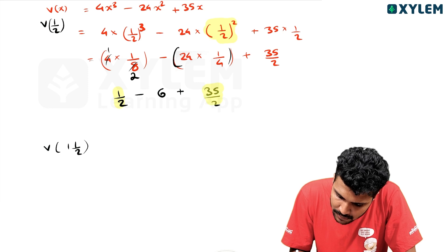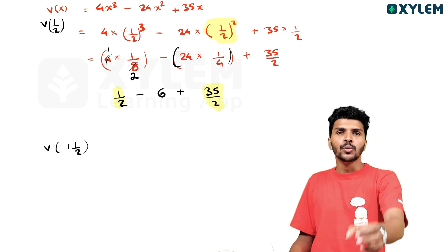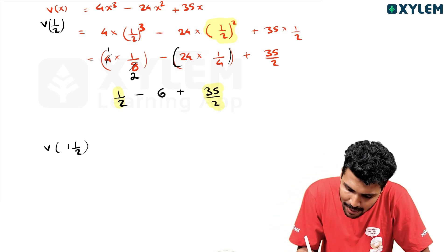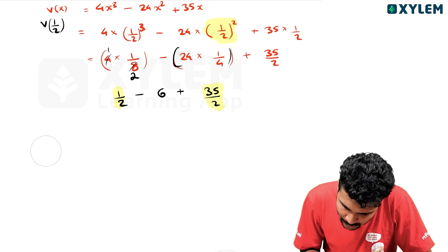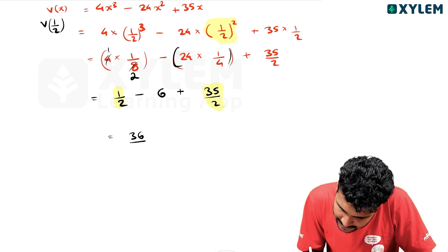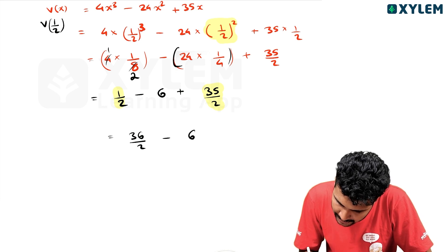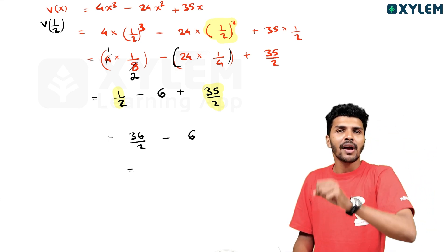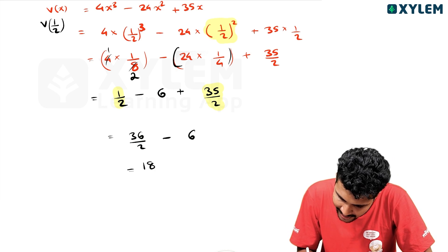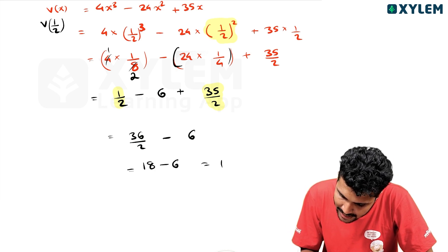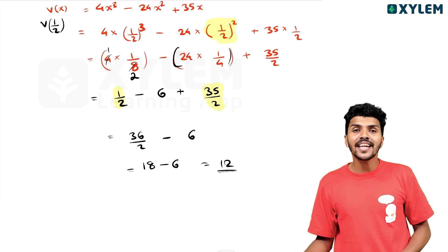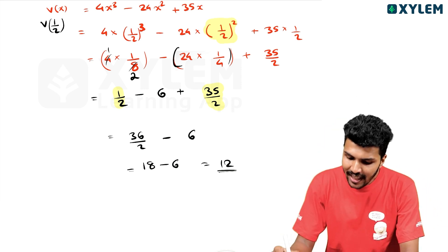Plus 35 by 2. So we have 1 by 2 plus 35 by 2, which is 36 by 2, minus 6. 36 by 2 is 18, minus 6. That is 18 minus 6, answer: 12. V of 1 by 2 equals 12.